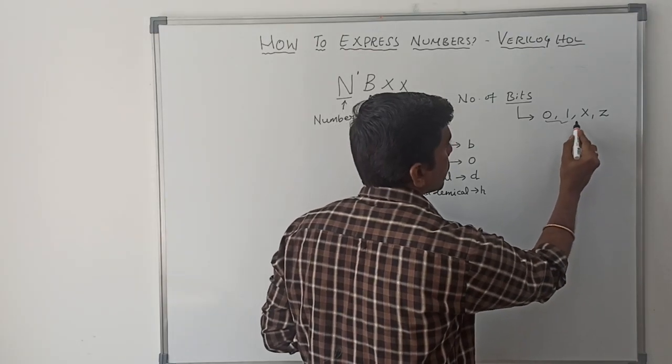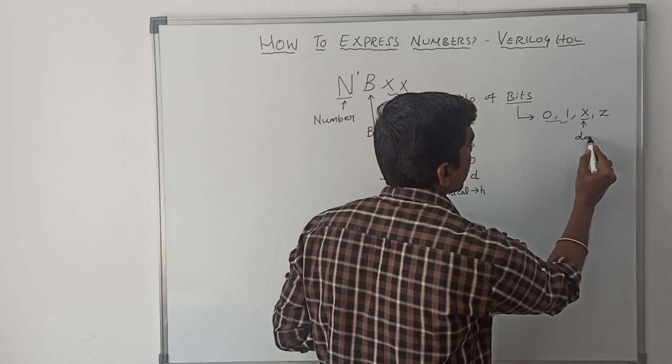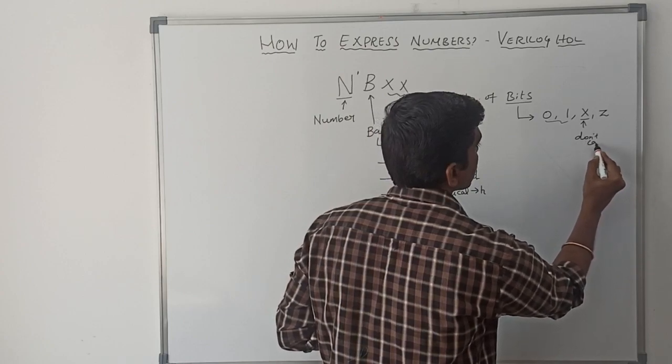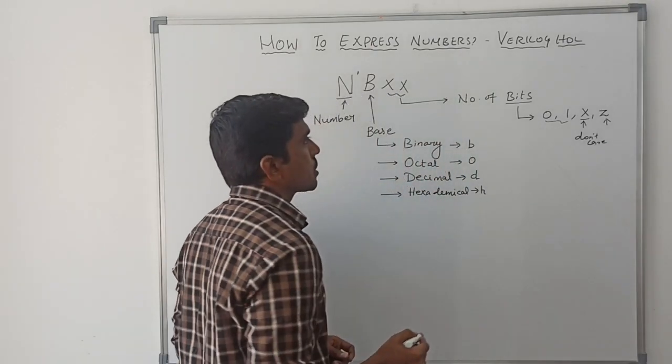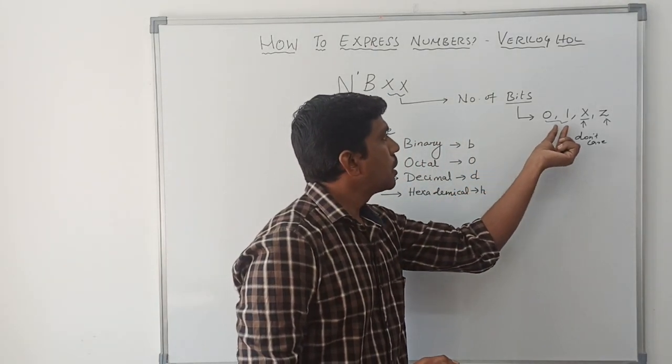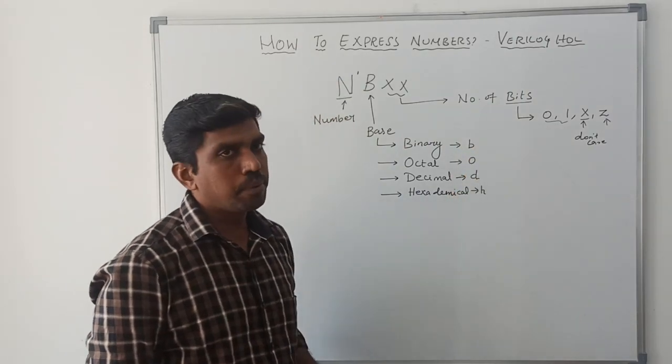0 and 1, already we are familiar. And X represents don't care value. This z represents high impedance state. These four numbers are used inside the bits.